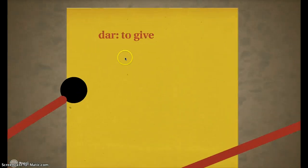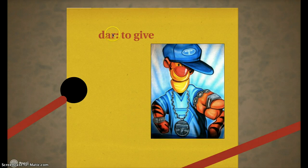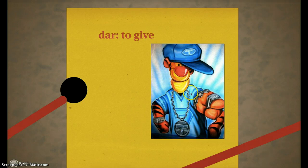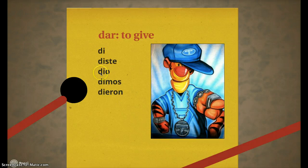Next, let's talk about dar. Dar is a little wannabe gangsta. He is an AR verb, but he wants to be an ER/IR verb — just like Tigger is a nice little cartoon tiger, but in this picture it looks like he wants to be a gangsta. So dar dresses up like ER/IR, wearing ER/IR endings: di, diste, dio, dimos, dieron. I gave, you gave, he gave, we gave, they gave.